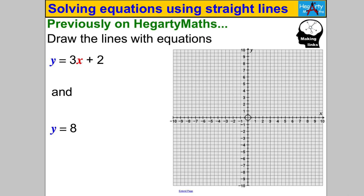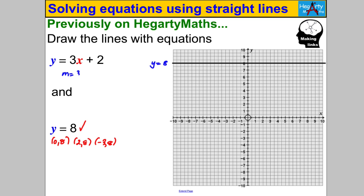Draw the lines with equations y = 3x + 2 and y = 8. Pause the video and double-check you can do that. The line y = 8 is the easiest — all coordinates where y is always 8. Now y = 3x + 2 has a gradient of 3 and a y-intercept of (0, 2). Starting at the y-intercept, a gradient of 3 means across 1 unit, up 3 units, giving us our straight line.